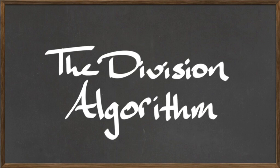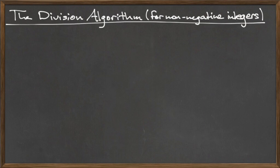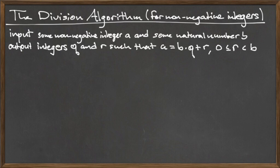In this video, we will consider two separate division algorithms: one for when the input a is non-negative (zero or bigger), and one where the input a is strictly negative. In this slide, we present the division algorithm for the non-negative input a. This algorithm takes a non-negative integer a and natural number b as input, and outputs two integers q and r such that a equals b times q plus r, and the remainder r satisfies zero is less than or equal to r is less than b, which is the definition of division covered in a previous video.